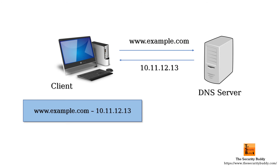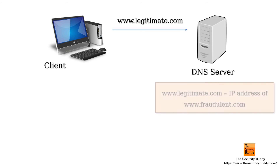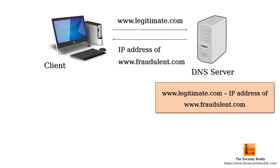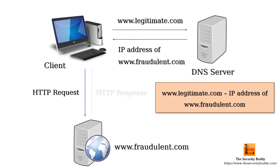Attackers may use several techniques to poison a DNS cache. When the DNS cache of a server is poisoned, it stores a malicious entry that maps a legitimate domain name to an IP address of the attacker's server. As a result, when the user types the URL in the browser, the browser ends up receiving an IP address of the attacker's server, and the user is redirected to the attacker's website instead of the legitimate one.